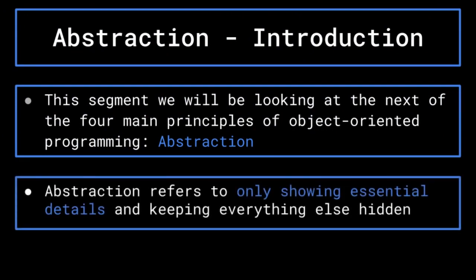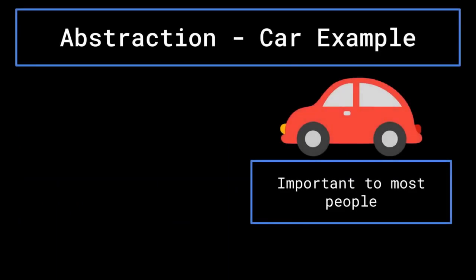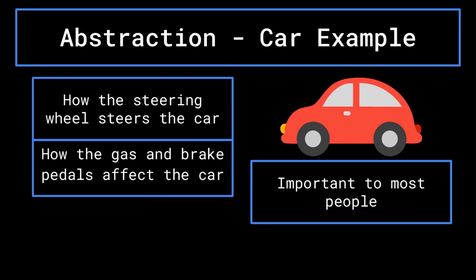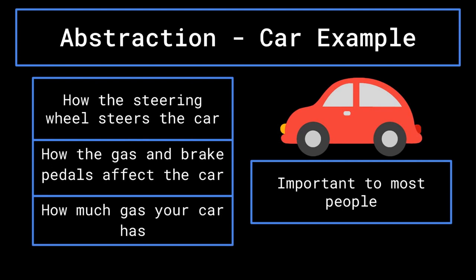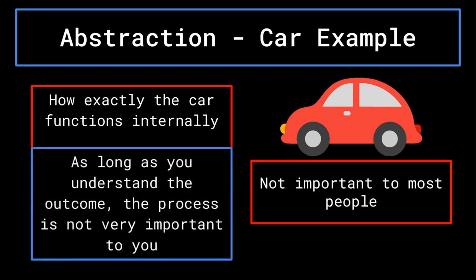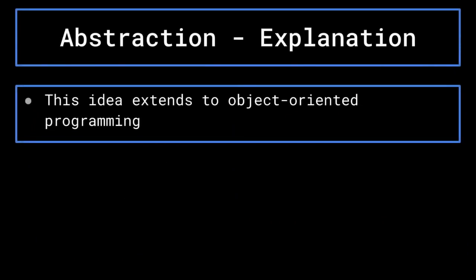Abstraction refers to the idea of only showing essential details and hiding everything else. This idea is present in everyday life. When you drive your car, there are some things you need to understand: how the steering wheel steers the car and how the gas and brake pedals work. You also need to know how much gas your car has. However, the exact way that the car works internally isn't something that most people need to concern themselves with. How the gas reacts in the engine and how that translates into the car moving forward really isn't important while you are driving. Whoever built the car had to worry about how exactly the car would work so that you don't have to.